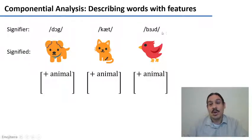And then there's bird as the signifier. And then the signified is all of the ideas that you get when you hear bird, which we're going to summarize with the emoji. All of these are plus animal.